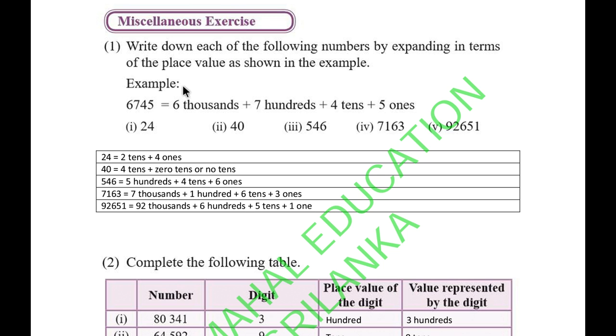In the example, they say 6,745 - you need to write 6 thousands, 7 hundreds, 4 tens, and 5 ones. I'll arrange everything here: 24, 40, 546, 7163, and 92,651.